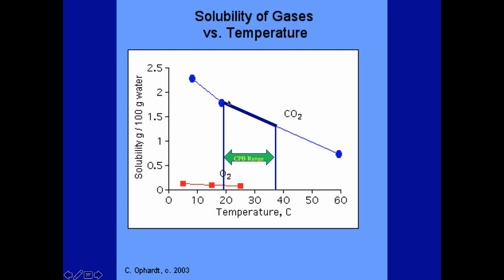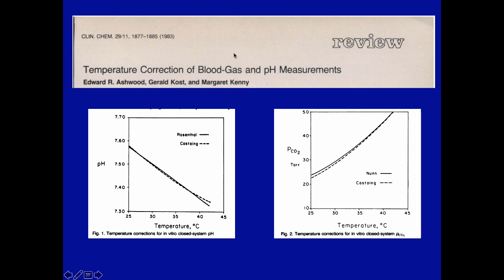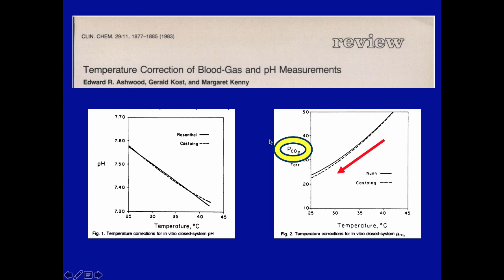CO2 becomes more soluble as you cool. A 1983 paper confirms that as temperature goes down, the partial pressure of CO2 also goes down. As solubility goes up, the partial pressure of CO2 goes down because the more soluble it is, the less outward pressure is exerted. So as temperature decreases, solubility increases and PCO2 decreases.